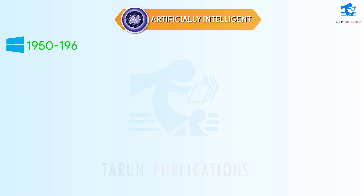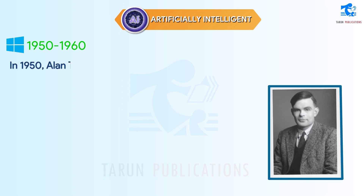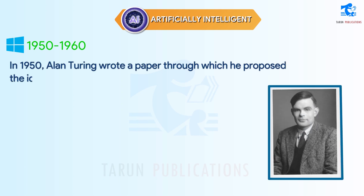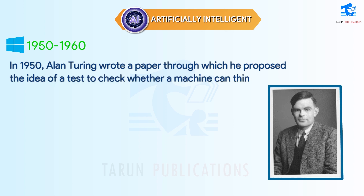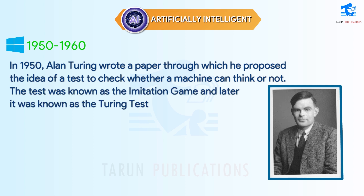1950-1960. In 1950, Alan Turing wrote a paper through which he proposed the idea of a test to check whether a machine can think or not. The test was known as the imitation game, and later it was known as the Turing test.